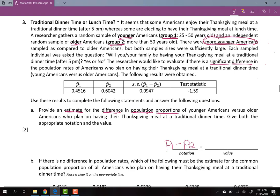So I better put a hat over each of these P1 and P2s because I really want the statistic from the sample. So I'm looking at the sample proportion of group 1, which is 0.4516, minus the sample proportion of group 2, which is 0.6042. I'll do that in my calculator, yielding the result of negative 0.1526.